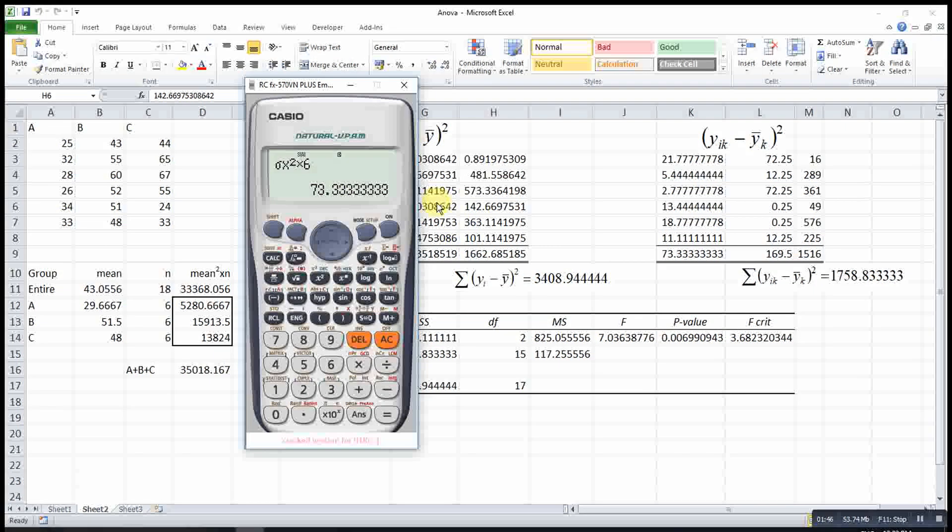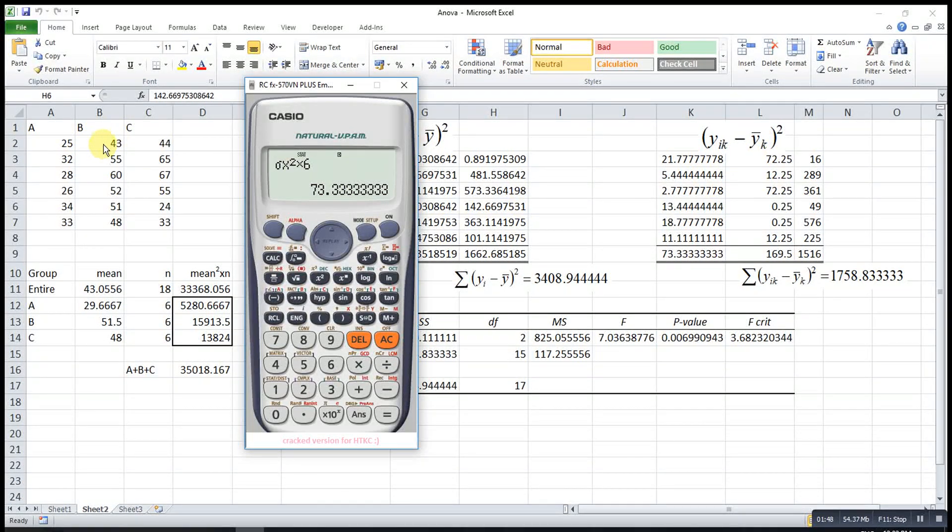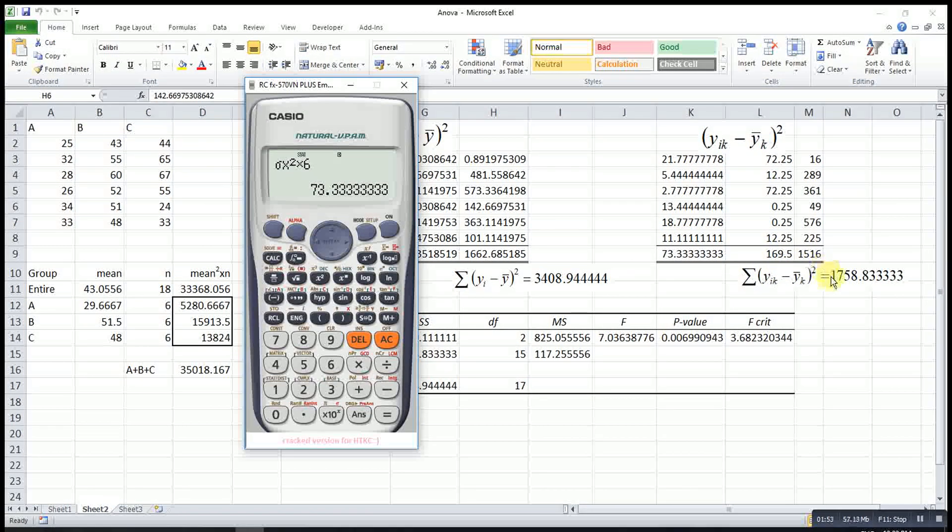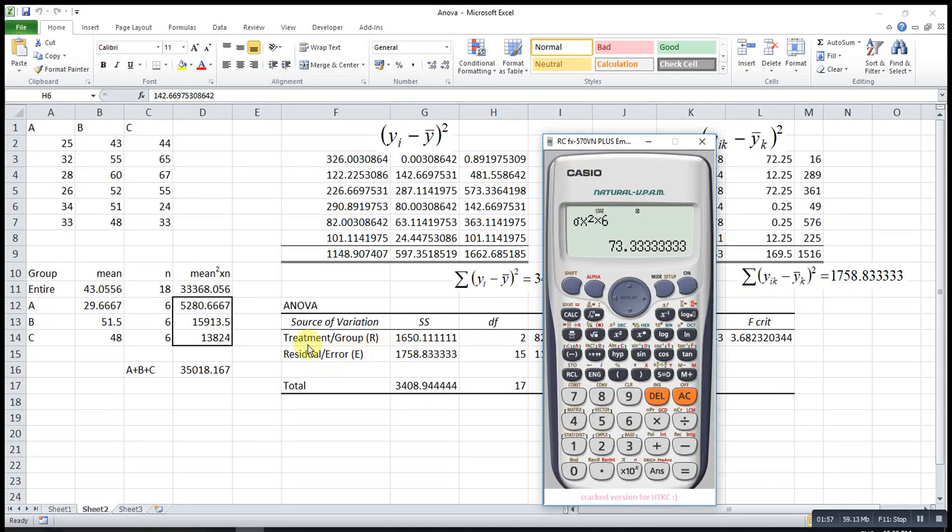This is group A. We repeat the same steps for groups B and C to obtain these two values. Then we take the sum, which will be our sum of square errors, or SSE.